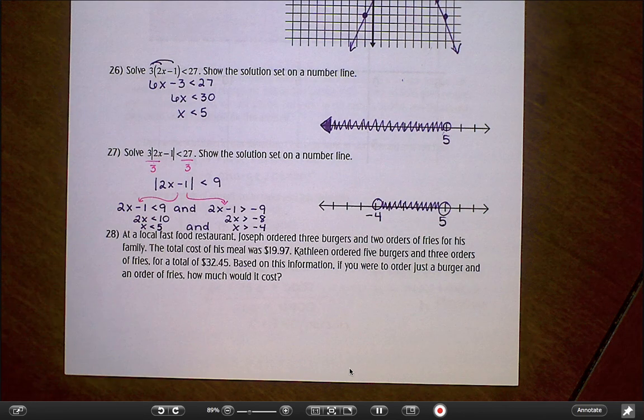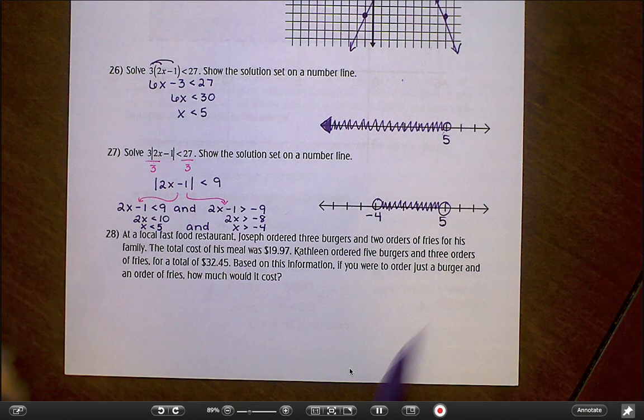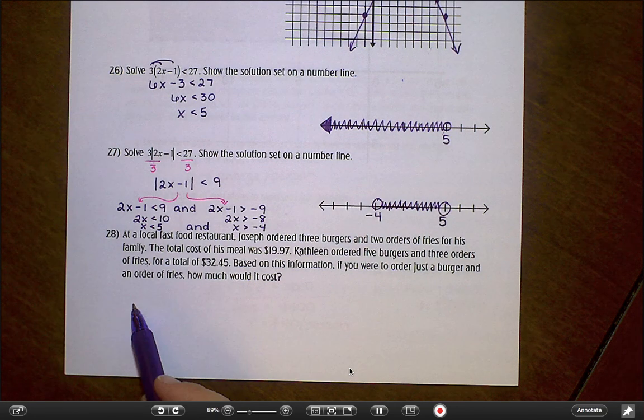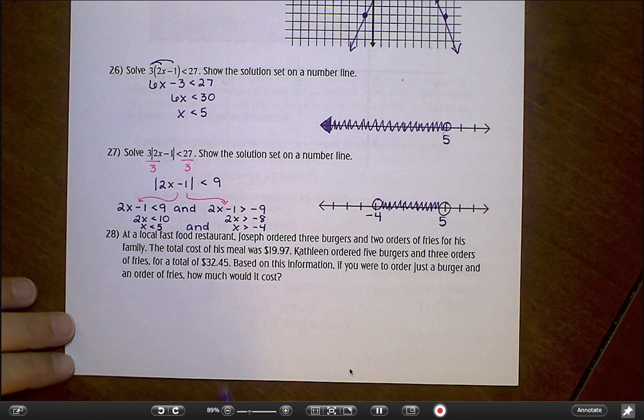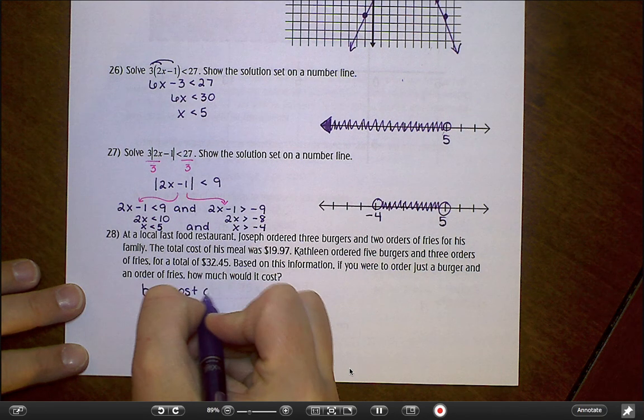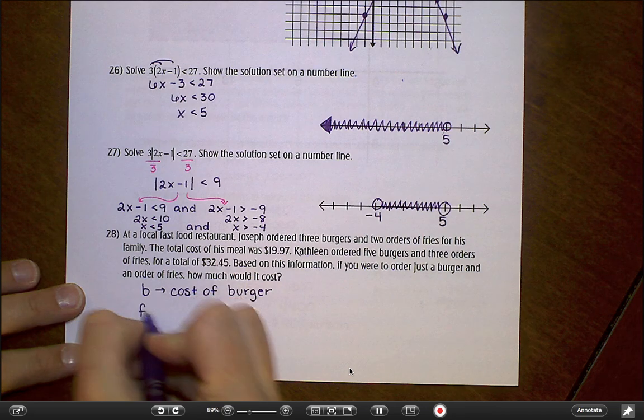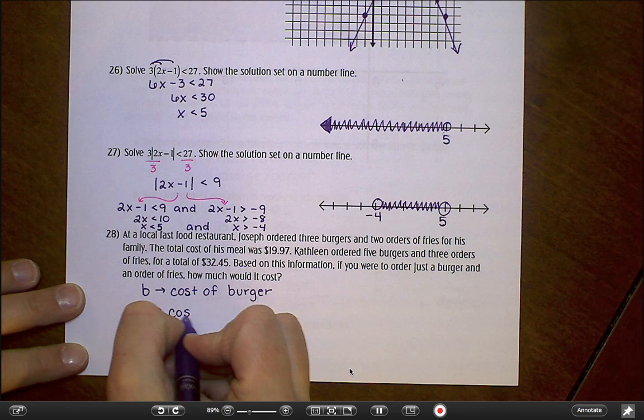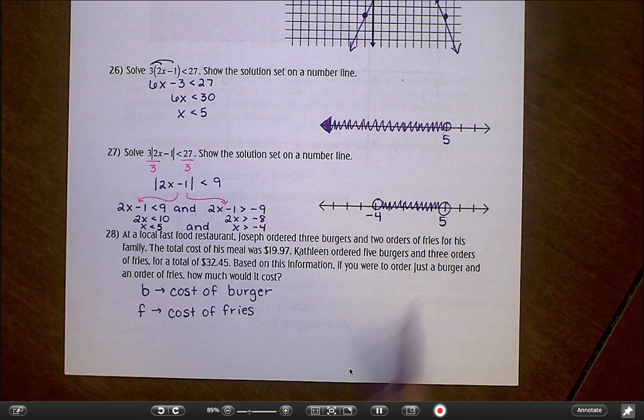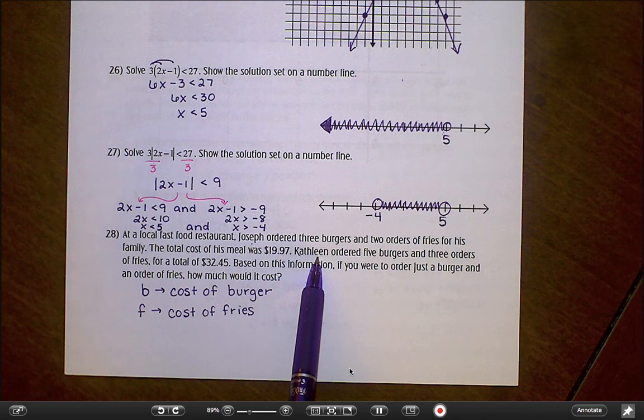We're ordering food at a fast food restaurant, burgers and fries here. And the final question is, if you were to order a burger and fries, how much would it cost? Before we can answer that question, really what we need to know is what's the cost of just a burger and what's the cost of just an order of fries. So for defining my variables here, I'm going to say that B represents cost of a burger. And F represents cost of fries.